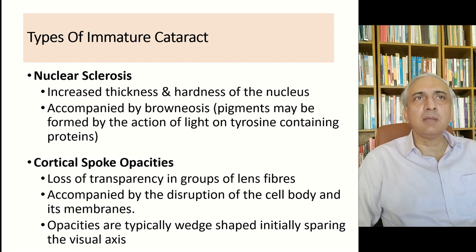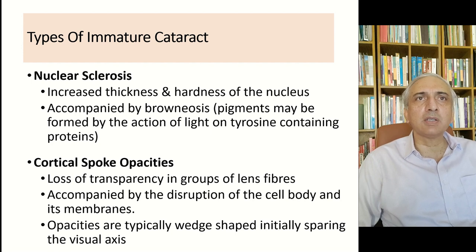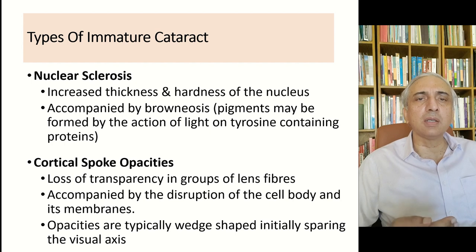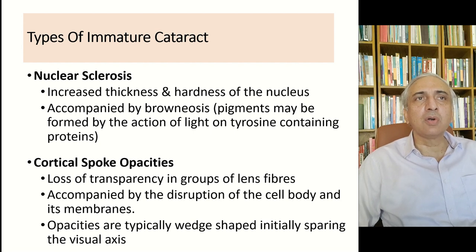Types of immature cataract include nuclear sclerosis, due to increased thickness and hardness of the nucleus accompanied by brunescent pigments formed by the action of light on tyrosine-containing proteins. As nuclear sclerosis advances, the nucleus changes from yellow to brown — called a brunescent cataract — and at the final stage it becomes dark brown, called a nigra cataract.